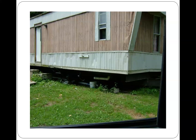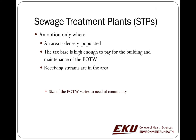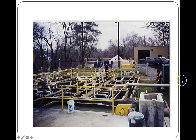Municipal wastewater plants are the best option when you have a lot of people living closely together, a high enough tax base to pay for building and maintaining the treatment works, and typically some sort of receiving water — a stream, creek, or river in the area. Lakes are not ideal; we don't want to be discharging into non-flowing waters.